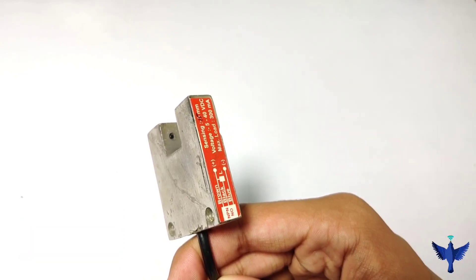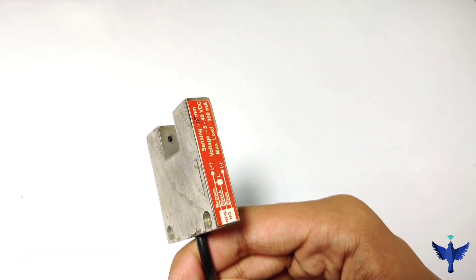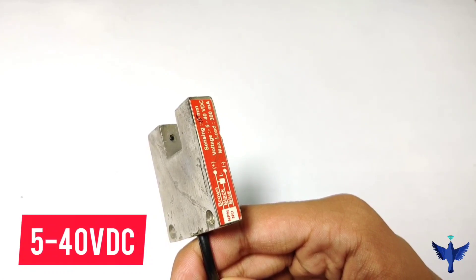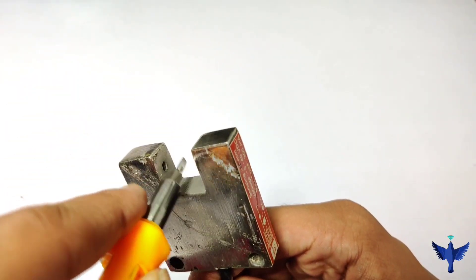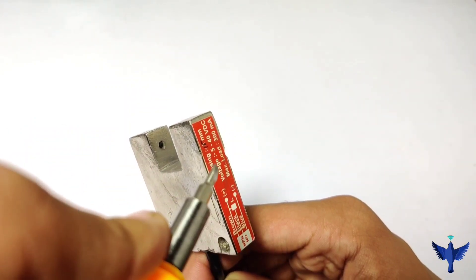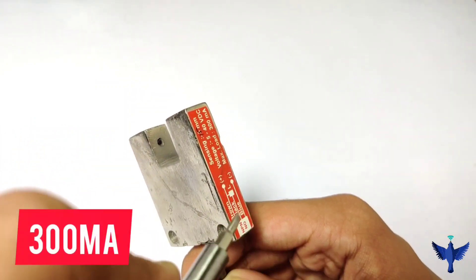This sensor works on a voltage range of 5 to 40 volt VDC. It is its operating range. Its sensing range is given as 15 mm, and the maximum load is 300 milliampere. Now I will do the connections.